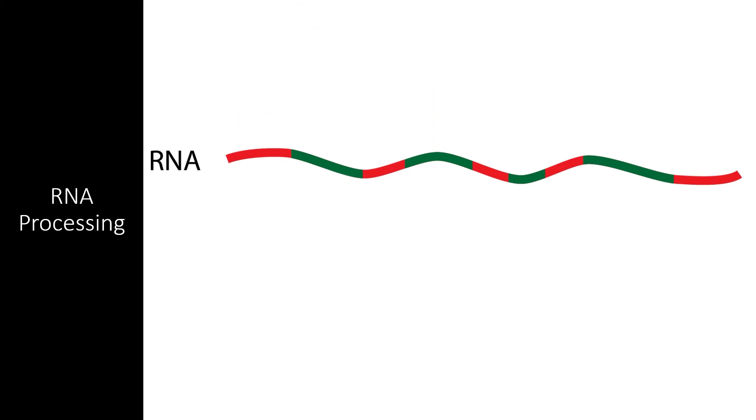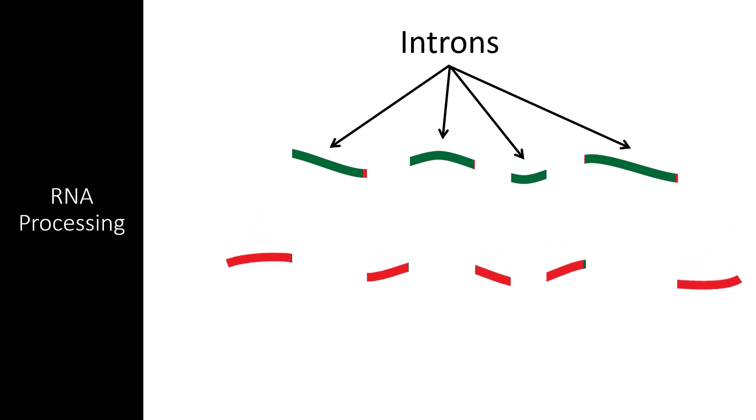The process of splicing starts with the removal of introns. The remaining exons are reassembled and bonded back together to create the pre-mRNA transcript. This sequence typically only contains coding regions, all arranged in the proper order to create a protein.